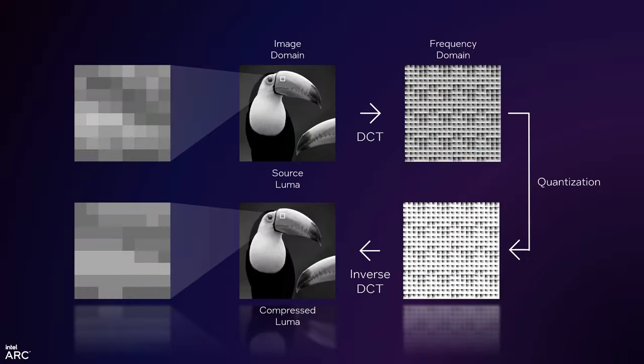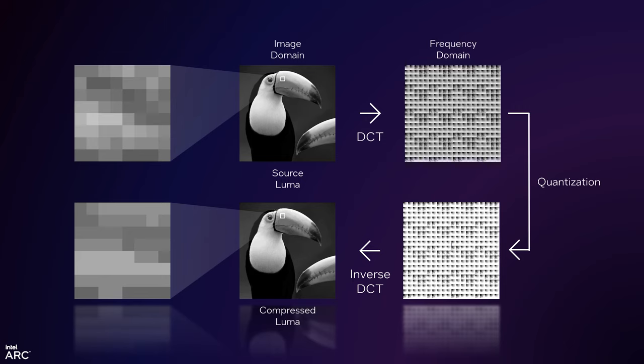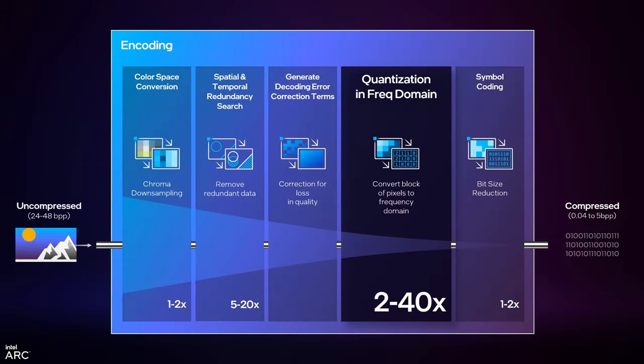Once you've done the DCT, you can do what's called quantization. All those boxes on the right are frequency representations of the same grid. We throw out portions of the frequency spectrum that you can't see — because I know you're a human, and human eyes cannot perceive high frequencies in images. That's where the compression magic happens. Even after quantization, if you do an inverse DCT — recombining how much of each pattern — you get an almost identical image back. The differences occur in places you're not going to perceive.